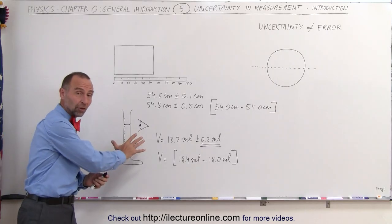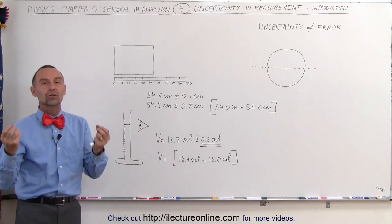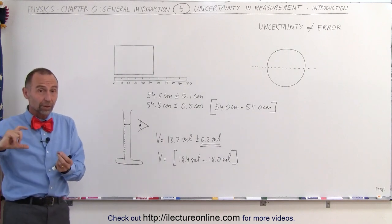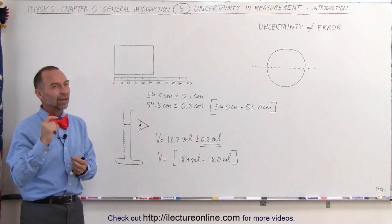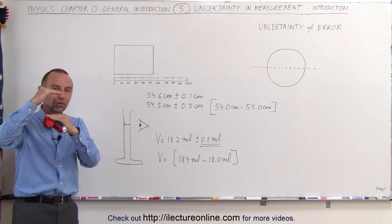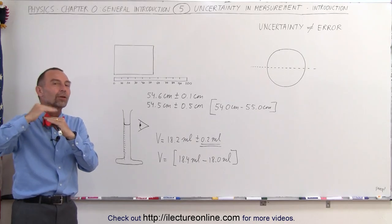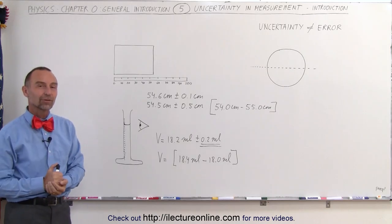So first of all, understand what uncertainties are. They're definitely not errors. And then in the next video, we're going to show you how to actually use numbers that have uncertainties with them to actually calculate the final values. You always have to take into account that the numbers you're using are not absolute correct numbers. They have a certain amount of range in it where you're not quite certain what the correct value was. And that's how we deal with uncertainties.